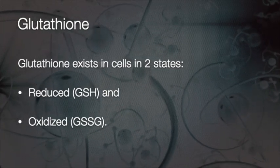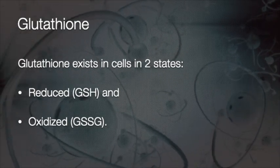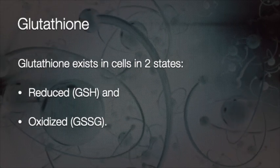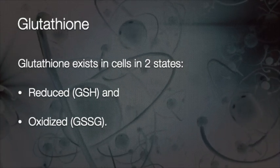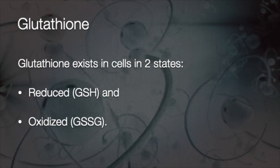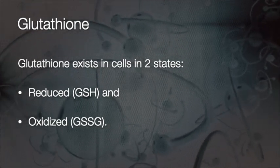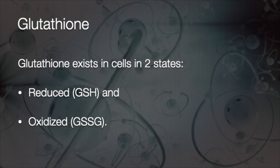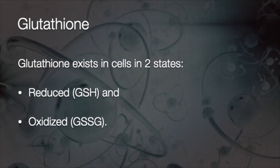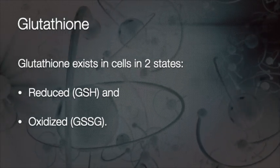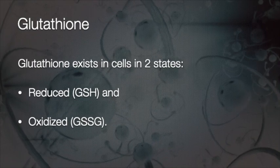Glutathione exists in our cells in two states: a reduced state and an oxidized state. It is very important to have these two states because they are interchangeable and they participate in very important reactions called redox, or reduction-oxidation, reactions. It is important to reduce oxidized molecules in the body; oxidation is one of the major side effects of using oxygen in reactions.